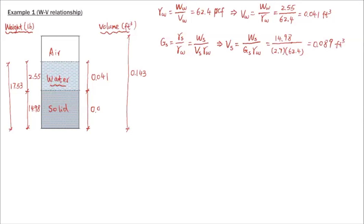We can now put the volume of solids on the phase diagram. Once we have the volume of solids, volume of water, and total volume, the volume of air equals total volume minus volume of water minus volume of solids. This gives 0.013 cubic feet. Completing this phase diagram is the most important step in solving weight-volume relationship problems. Once it's complete, everything else follows from basic definitions.